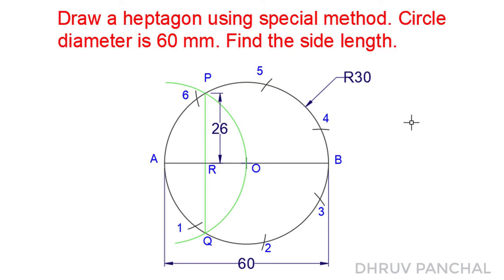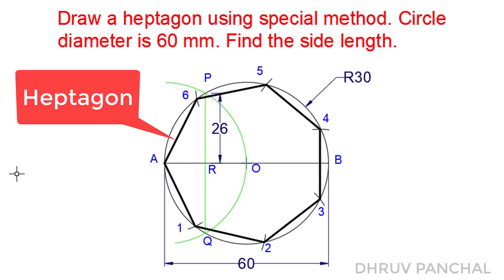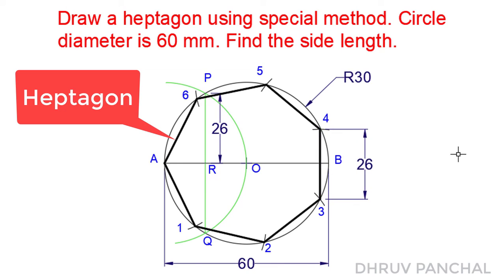Now we will join point A, point 1, point 2, point 3, point 4, point 5, point 6, and back to point A to draw a regular heptagon. We also have to find the side length of the heptagon, so measure the length of any side of the heptagon as shown.